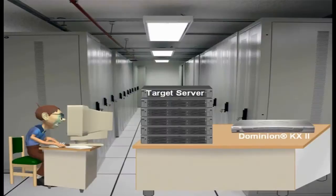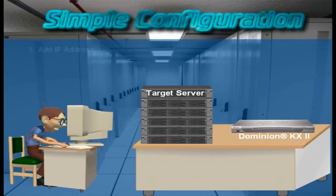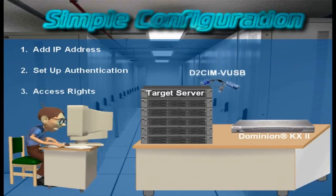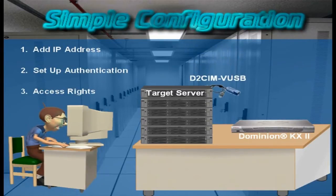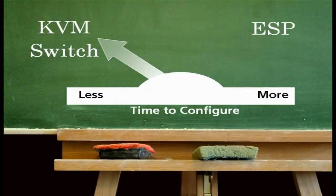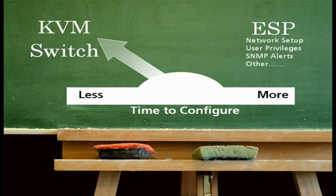Configuring a Dominion KX2 KVM network is simple. Add an IP address and set up authentication and access rights. Then just connect the computer interface module — also called a SIM or dongle — to the server. Connect the CAT5 cable from the dongle to the KVM switch and you're set. A single KVM switch takes much less time than configuring 48 embedded processors because each ESP requires network setup, user privileges, SNMP alerts, and other parameters to be configured.